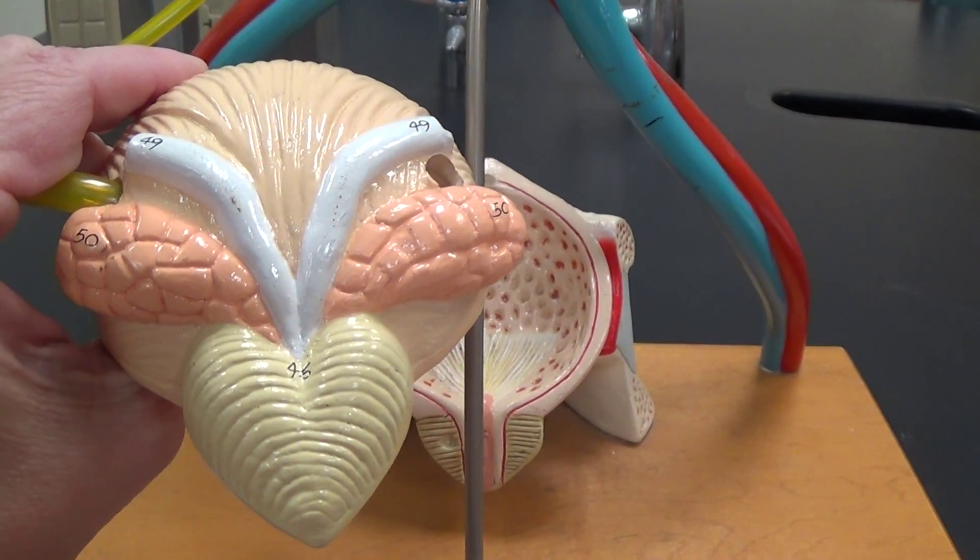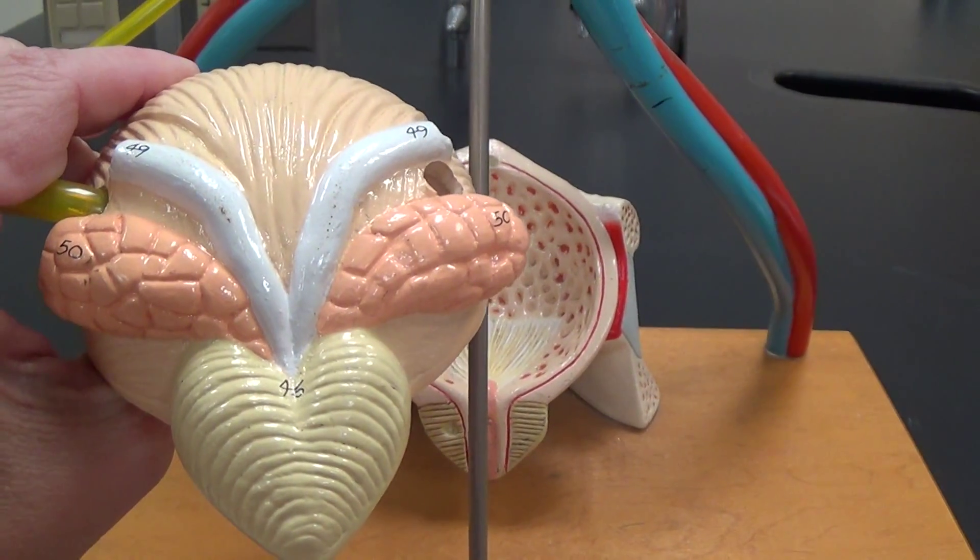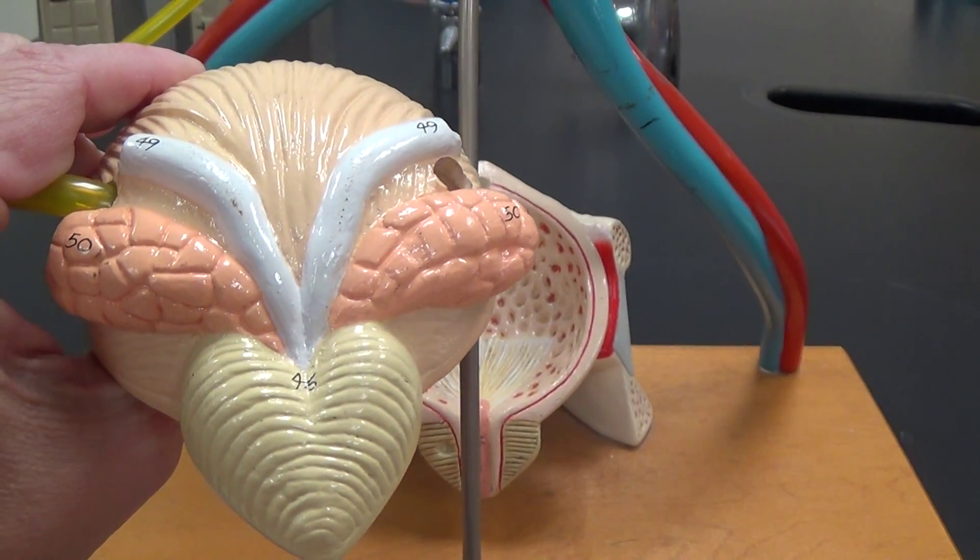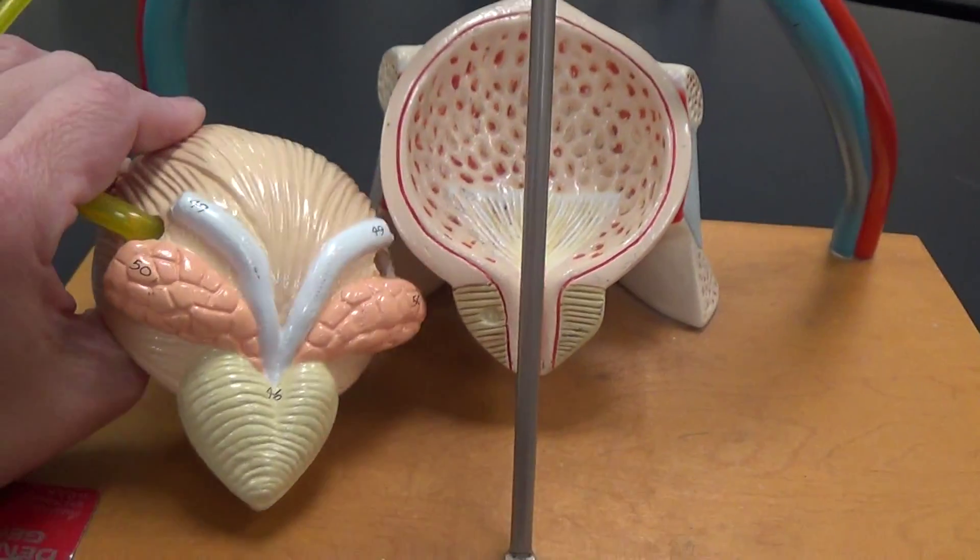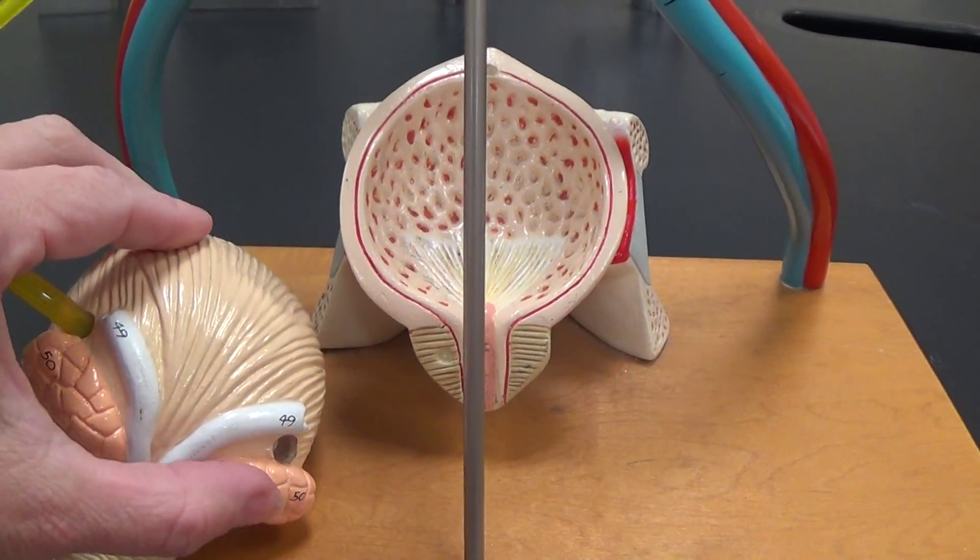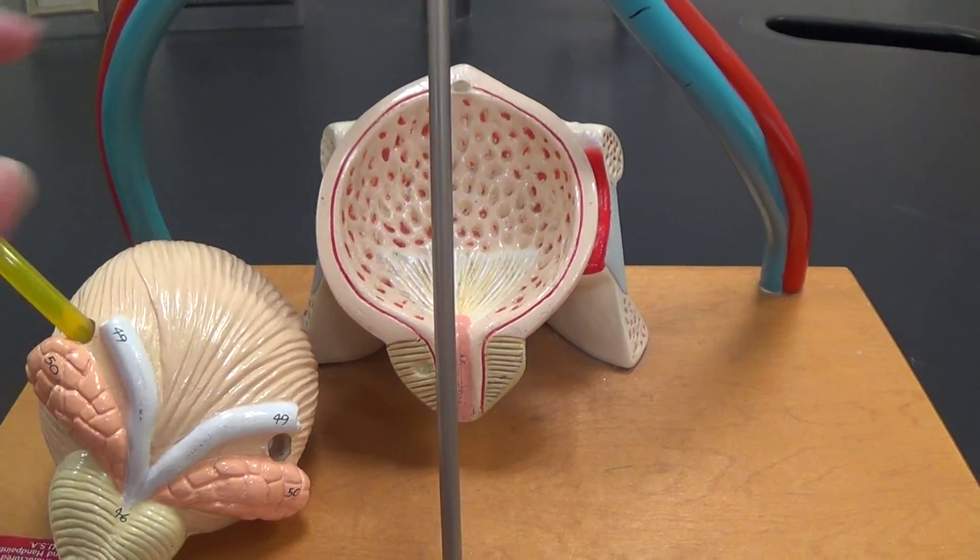So in yellow, we have the prostate. These peach-ish eye-like structures are the seminal vesicles. So we're seeing one, two. Remember, this is the posterior side.